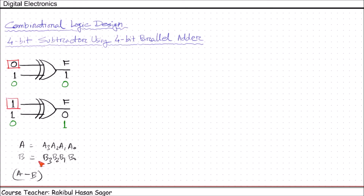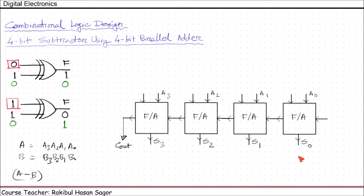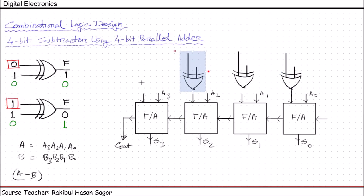Let us follow this method using the 4-bit parallel adder designed earlier. For the subtraction operation, A0, A1, A2, A3 are fed directly into the full adders. But for B, we need the one's complement, so B is not sent directly — instead B0, B1, B2, B3 are sent through XOR gates.